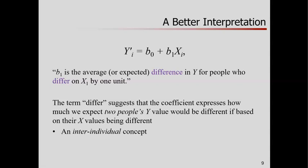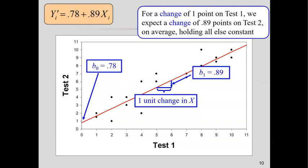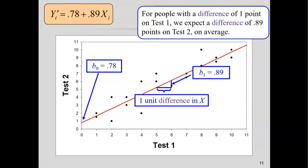So this is an inter-individual concept. Going back to our picture, our picture is still the same. Our regression model is still the same. In the previous interpretation, I thought, for a one unit change in x, what happens on y? Change kind of induces the notion of people are moving. They're changing over time. Or if we could move them up on the scale one point, what would happen to their y value? That's the interpretation I want to push away from.